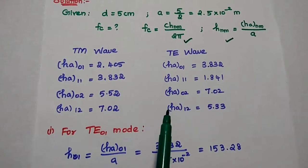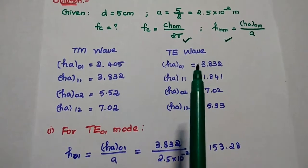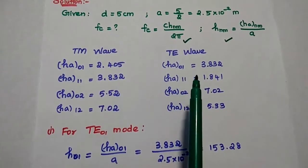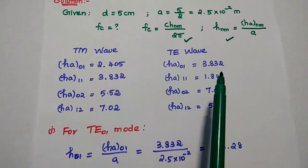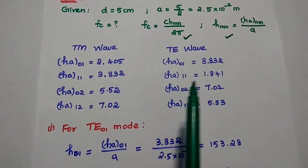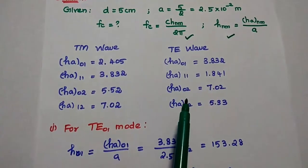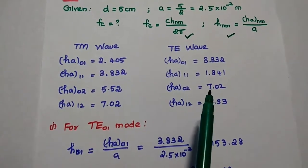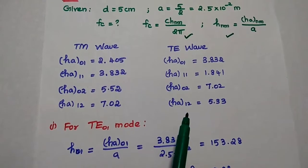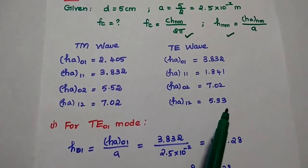Similarly, you have to remember the values for TE waves. For TE01, its value is 3.832. For TE11, its value is 1.841. For TE02, its value is 7.02. And TE12, its value is 5.33.